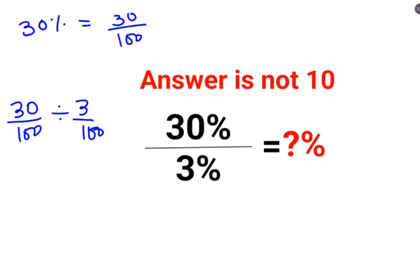We follow the rule of KCF, where K stands for keeping the first fraction as it is, C stands for changing the division sign to multiplication, and F stands for flipping or taking the reciprocal of 3 upon 100, which is 100 upon 3.